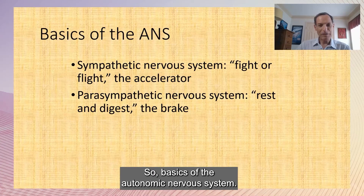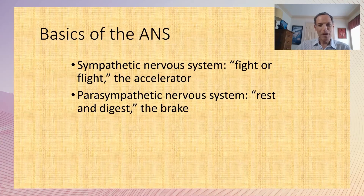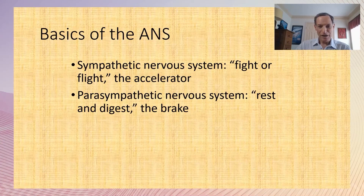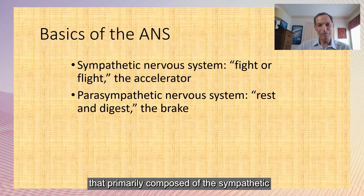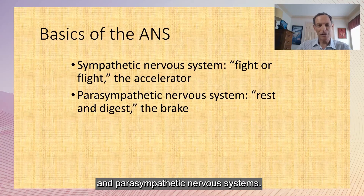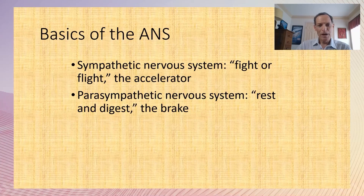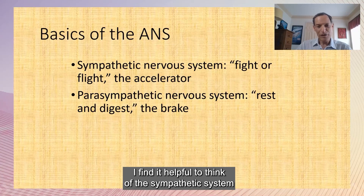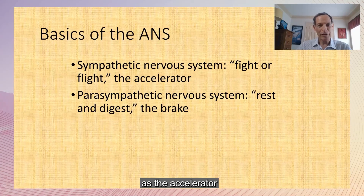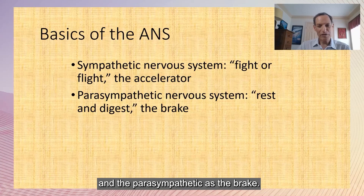The autonomic nervous system is primarily composed of the sympathetic and parasympathetic nervous systems. I find it helpful to think of the sympathetic system as the accelerator and the parasympathetic as the brake.